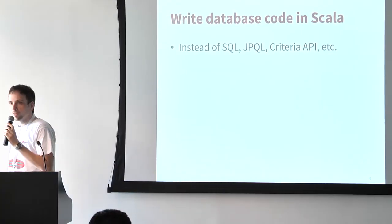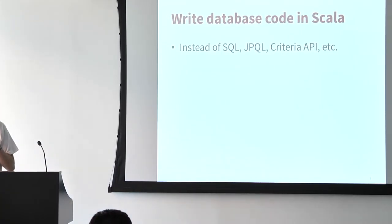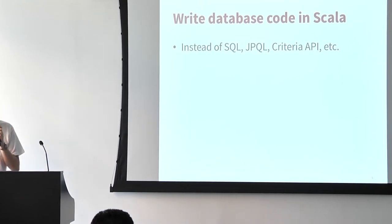Instead of writing your SQL code directly, or writing JPQL or a complicated criteria API for Hibernate, you just write the kind of code you know you're always writing — Scala code. If you look at this example, it's a very simple for comprehension. You've all written code like that in Scala, and it kind of looks like an SQL statement. What Slick does is take your Scala code and turn it into the select statement.